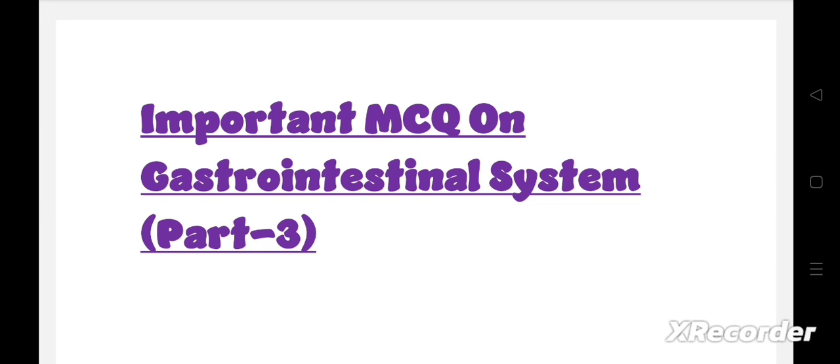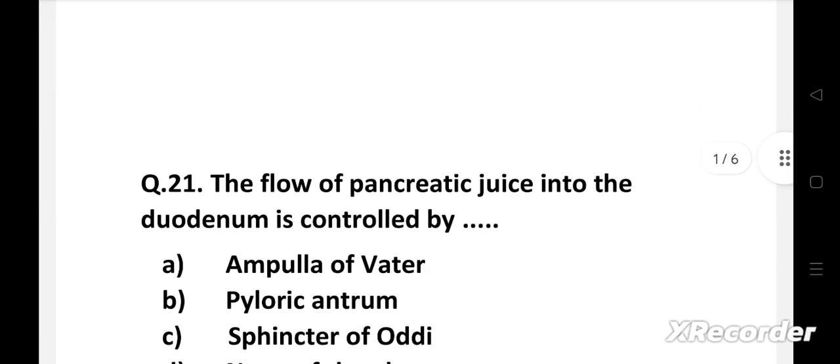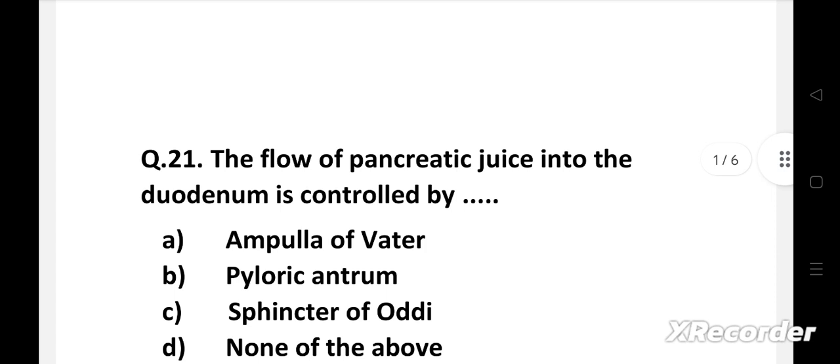For more important MCQ on nursing subjects, make sure you subscribe to this channel. Question number 21: The flow of pancreatic juice into the duodenum is controlled by - option A: ampulla of vater, B: pyloric antrum, C: sphincter of Oddi, D: none of the above.